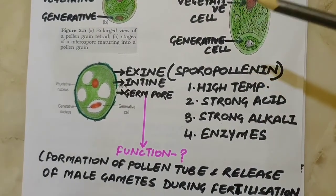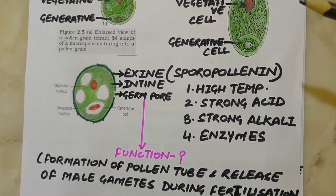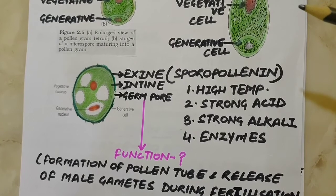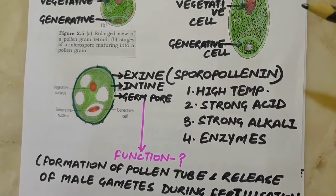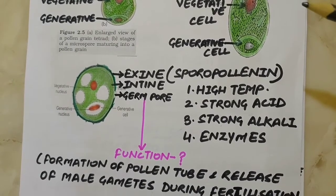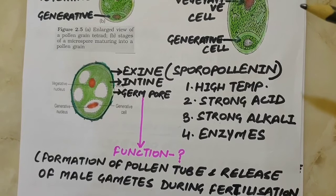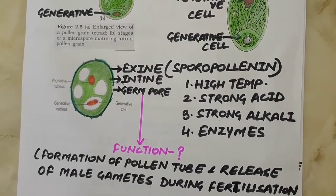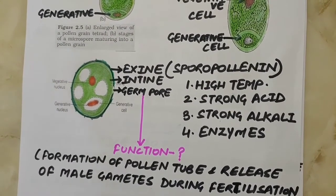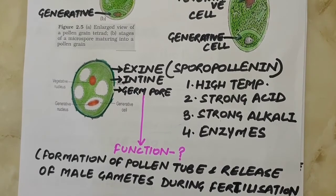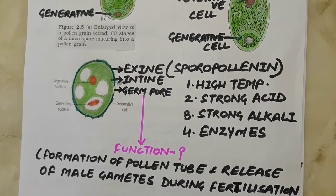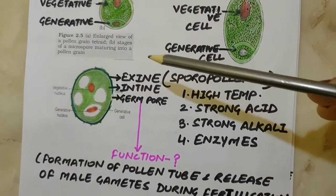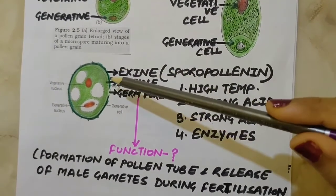Germ pores are apertures in the exine layer of the pollen grain where sporopollenin is absent. Their function is to help in the formation of the pollen tube and release of male gametes during fertilization. The inner wall of the pollen grain is called the intine.